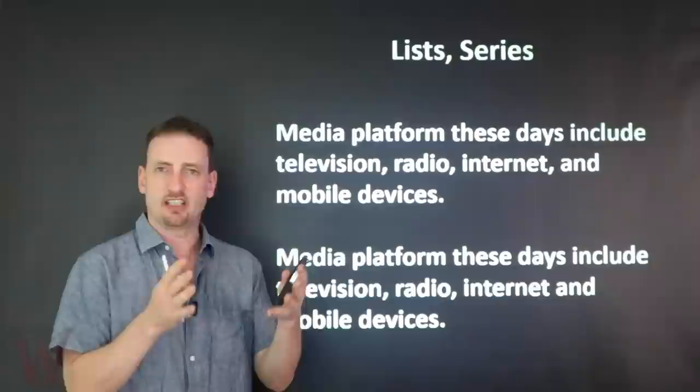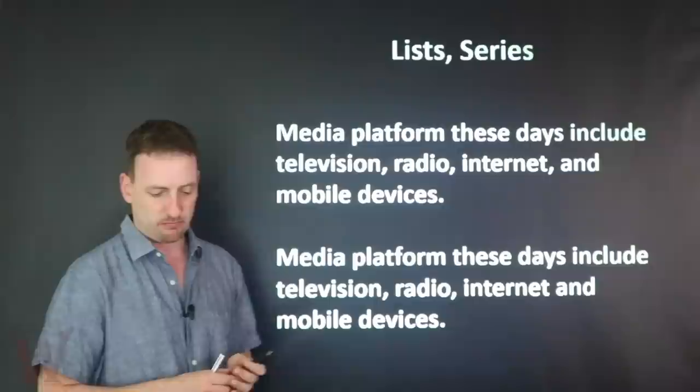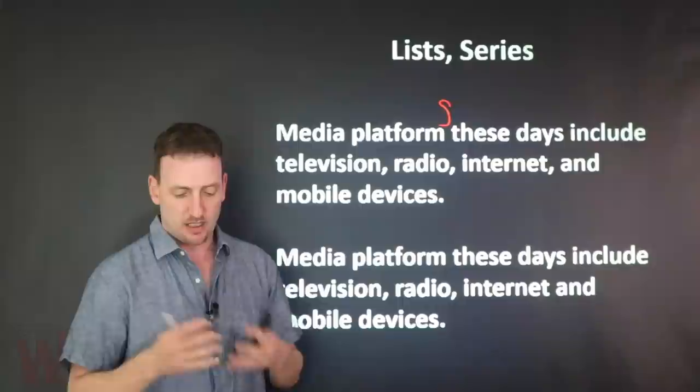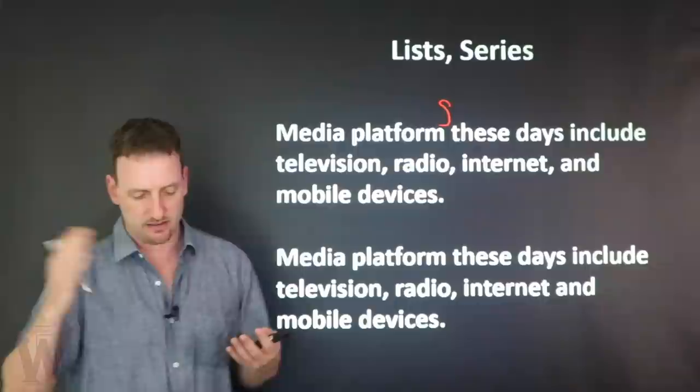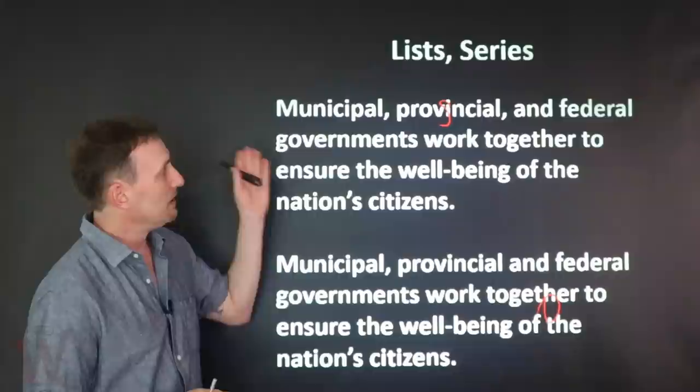So let's look at some examples. Remember, you can put a list or series at the beginning, middle, or end of a sentence — the rules don't change. For example: 'Media platforms these days include television, radio, internet, and mobile devices.' I have four items. You can include the serial comma before 'and mobile devices,' or leave it out — both are okay. Just be consistent.